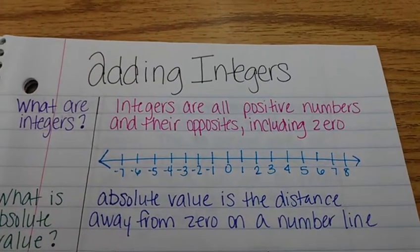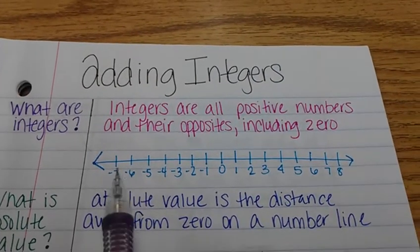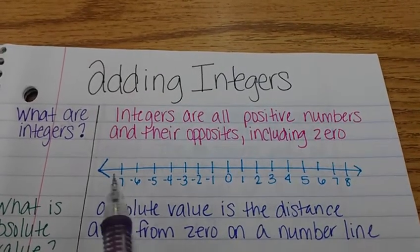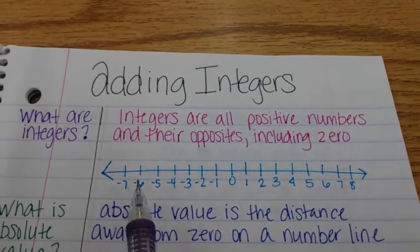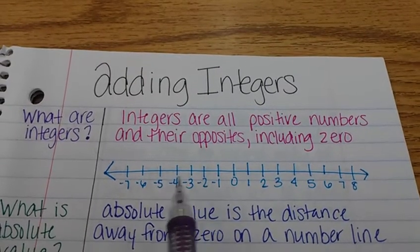That's what basically an integer is a whole number, positive and negative. Take a look at this number line. They go in order from left to right. Negative seven is less than negative six. Negative six is less than negative two.